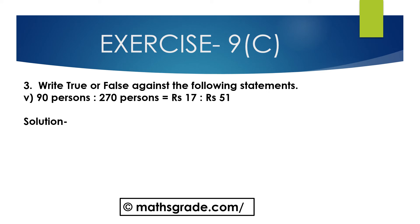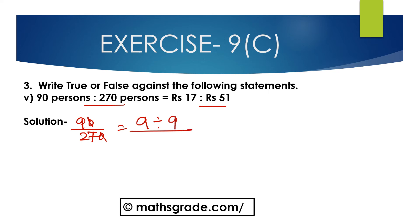Now, 5th bit: 90 percent is to 270 percent is equal to 17 rupees is to 51 rupees. We have to check it is true or false. 90 percent is to 270 percent — that is 90 divided by 270. Between 90 and 270, 90 is the common factor. Canceling zeros, between 9 and 27, 9 is the common factor. Divide antecedent 9 by 9 and consequent 27 by 9: that gives 1 is to 3.